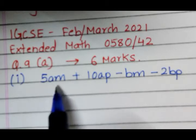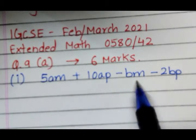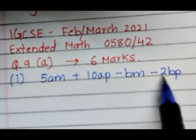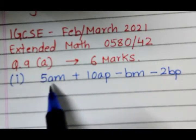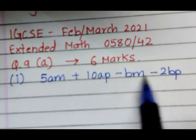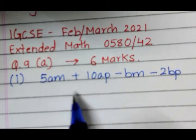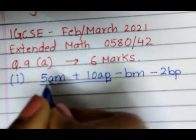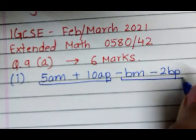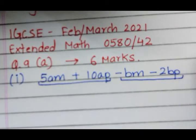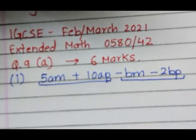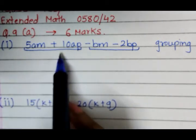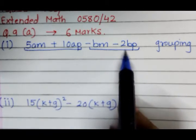Question 9a(1) has four different algebraic terms: 5am, 10ap, negative bm, and negative 2bp. If you try to find a common factor across all four terms, there is none. In this case, you divide the terms into two groups of two. The first group is 5am plus 10ap, and the second group is negative bm and negative 2bp. This method is called factorization by grouping.